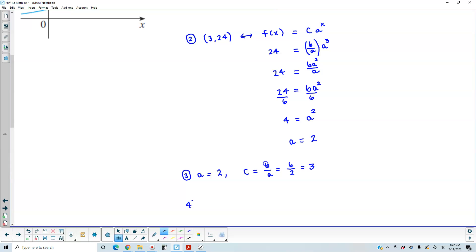And so now we can find out what our function looks like for the graph given. So f of x is going to equal the value of c, which is 3, times the value of 2 to the power of x.